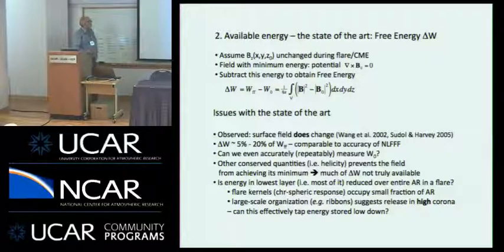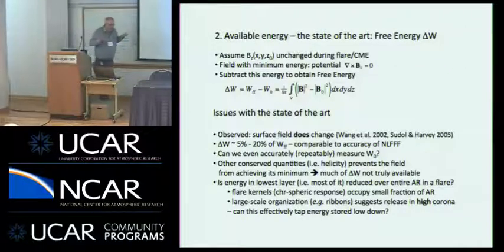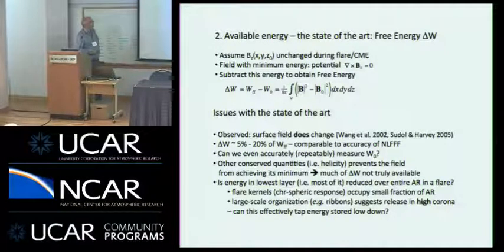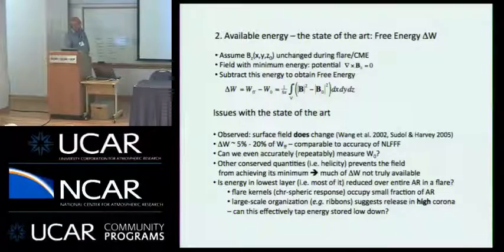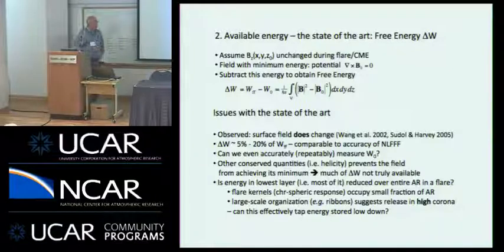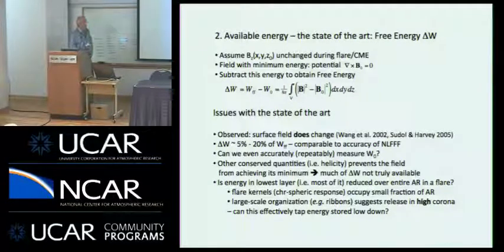The free energy is another problematic issue. You have to figure out an absolute minimum — if you assume the vertical magnetic field at the boundary doesn't ever change, there's a minimum energy: the potential field energy. You can subtract that off. Already we're in trouble because it's observed that that field does change. The free energies we're seeing are at the five to 20% level. Some of the field low down probably doesn't actually participate in the flare — the ribbons themselves.